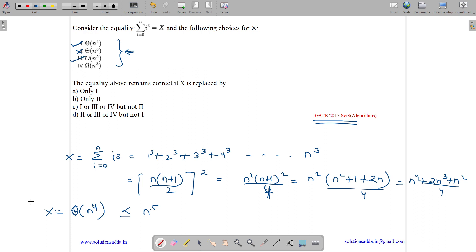Omega of n³ means greater than equal to n³. So n⁴ is greater than equal to n³, so the fourth is also correct.